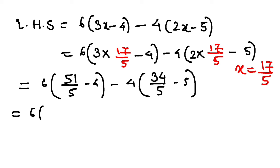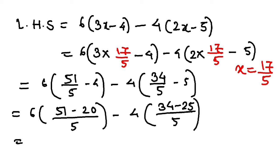This will give me, with LCM 5, so 51 minus 20 is 31 by 5, and 34 minus 25 is 9 by 5. So this gives me 6 into 31 by 5 minus 4 into 9 by 5.